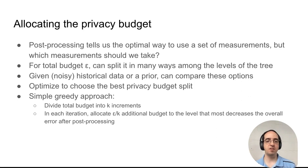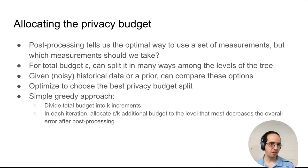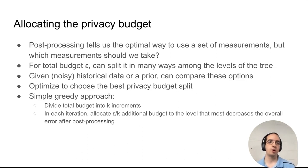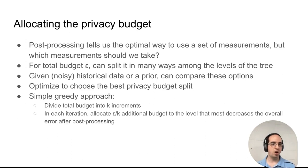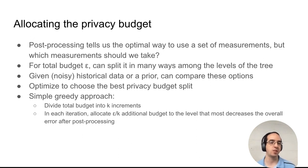This tells us, given a set of estimates, how we can optimally make use of them to get the best estimates. But which measurements should we take? Given a total privacy budget, how should we split it among the levels of the tree? There are many ways to do this. We could put all of our privacy budget on the leaves, only estimate the leaves, and infer the other counts by adding the appropriate combination of leaves.